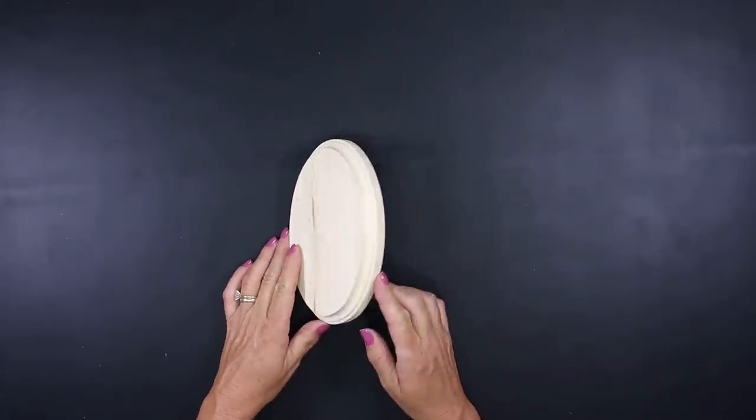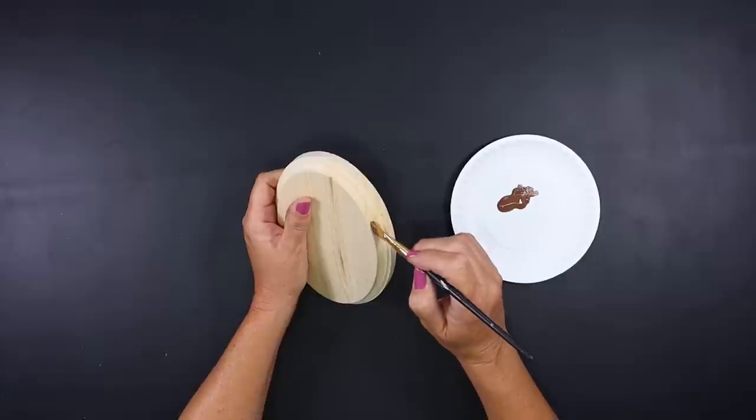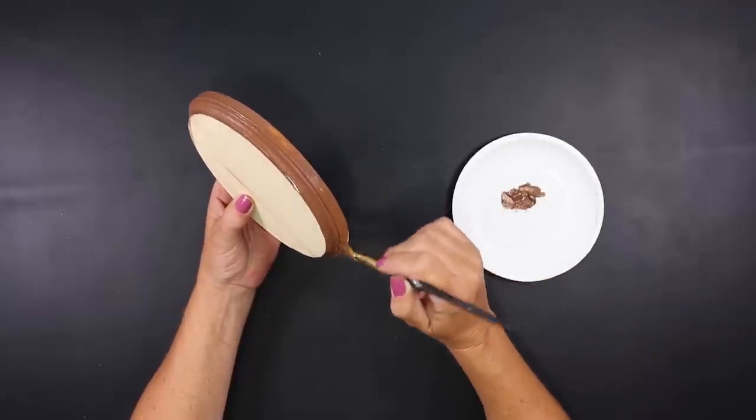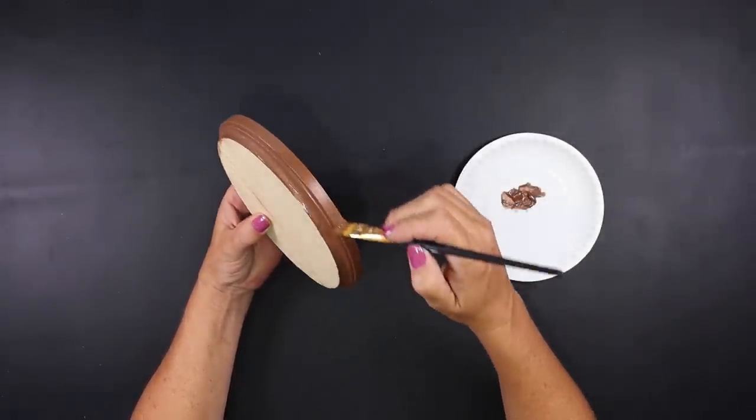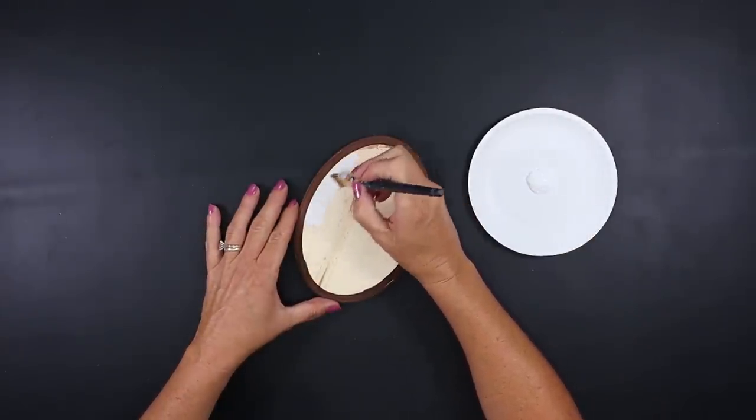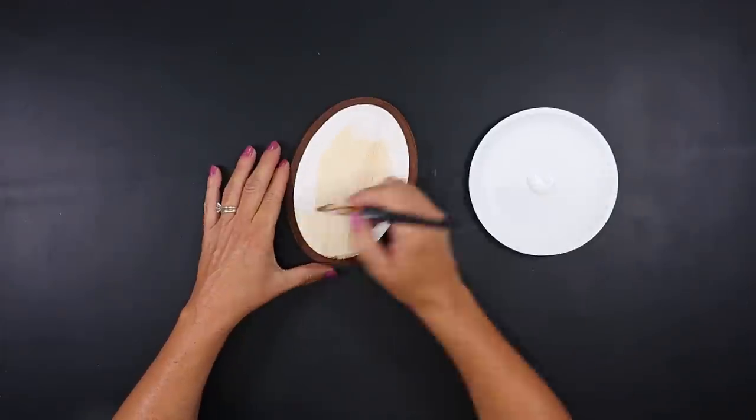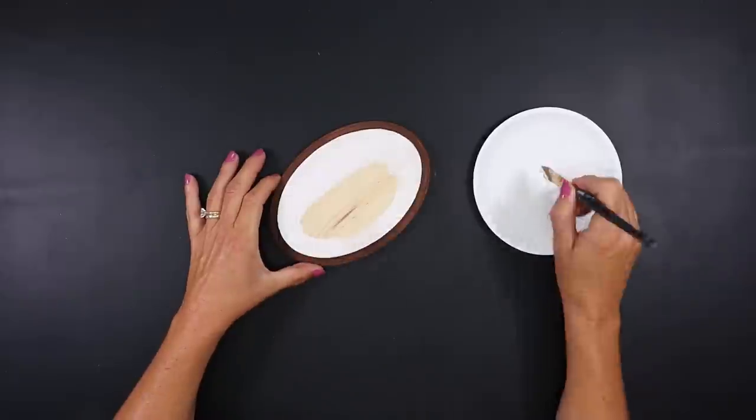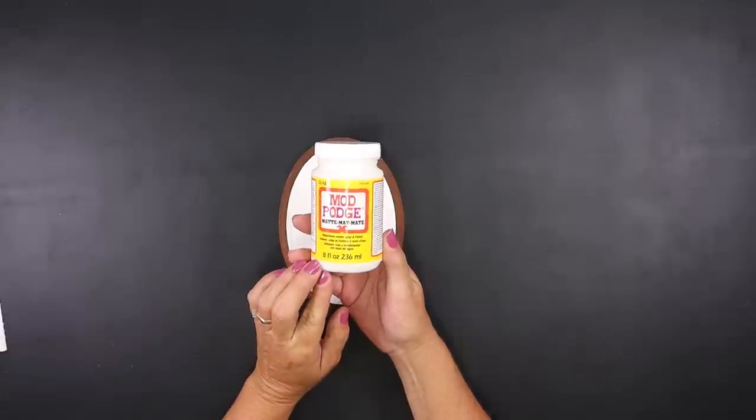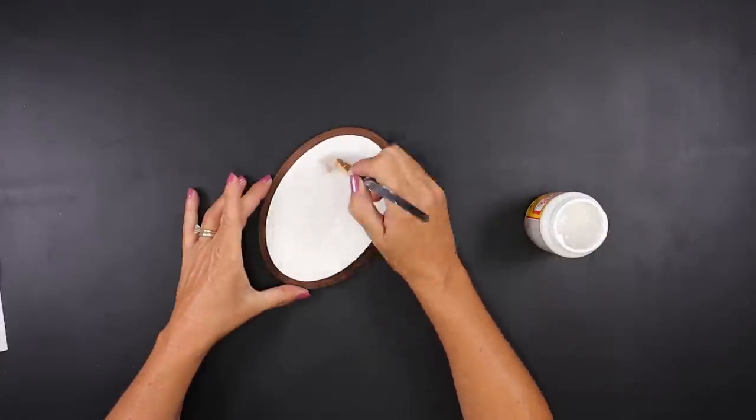We're using one of Dollar Tree's oval shaped wooden signs for this project. This one measures about seven and a quarter inches by five and a quarter inches. We're going to carefully paint the outside edge with a brown acrylic paint. This is the color brown oxide. We'll let that dry and then we're going to paint the top portion with two coats of white acrylic paint. Now that that has dried, this is how it should be looking. We're going to apply a layer of Mod Podge to the white painted surface only. Just apply one even coat and let that Mod Podge dry.